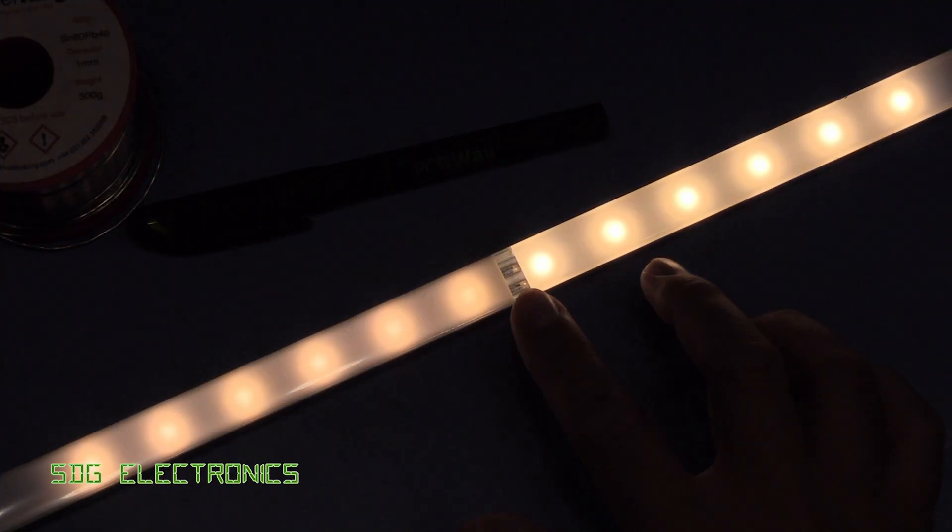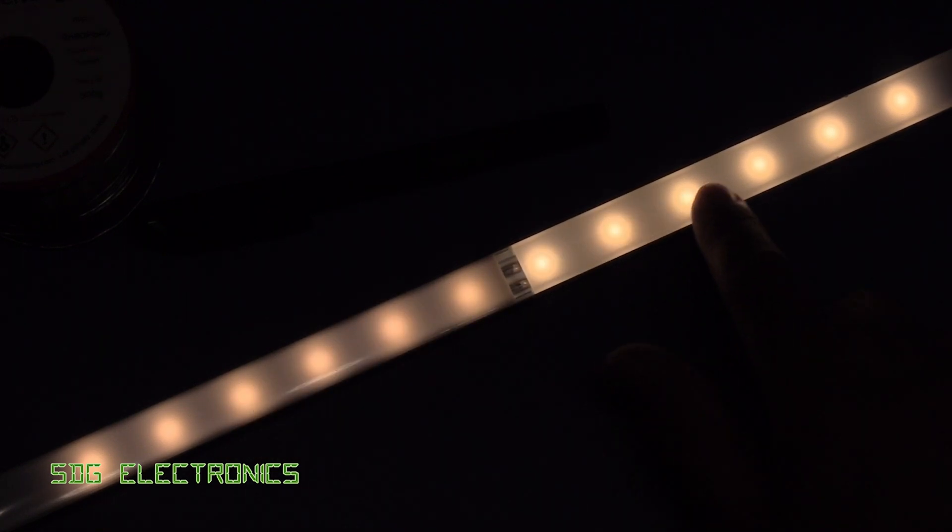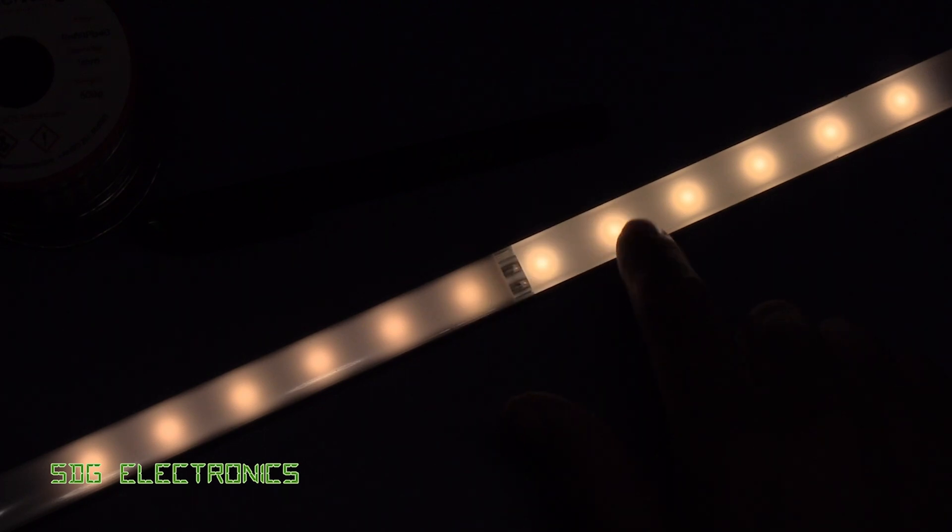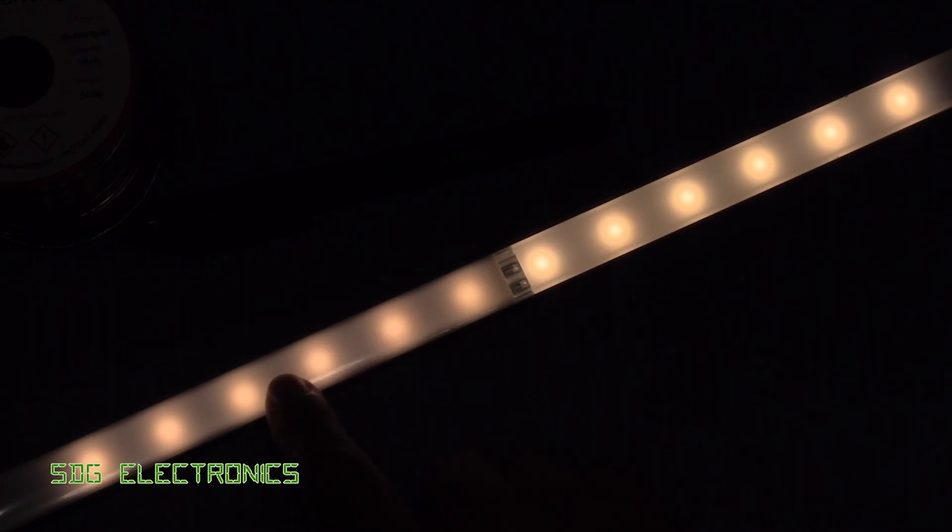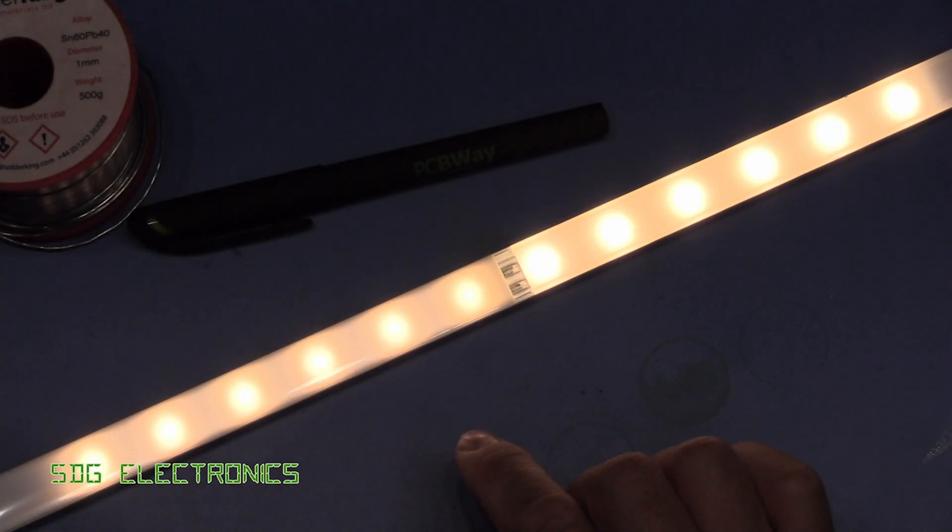And you can definitely see the difference between the two types of diffuser. If I change the exposure a bit, you can see on this side, this is the opal diffuser and this is the semi-translucent. And there's a lot more light getting through that one. And you can still see the hotspots quite easily. So it's not making a huge difference between those two types of diffuser.